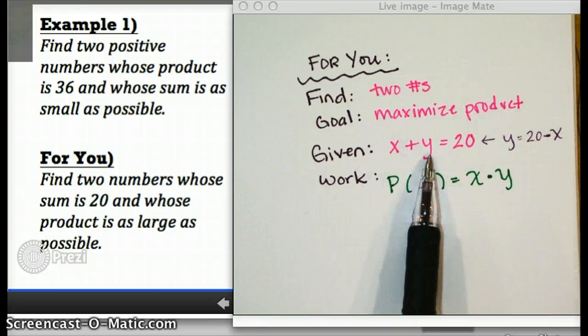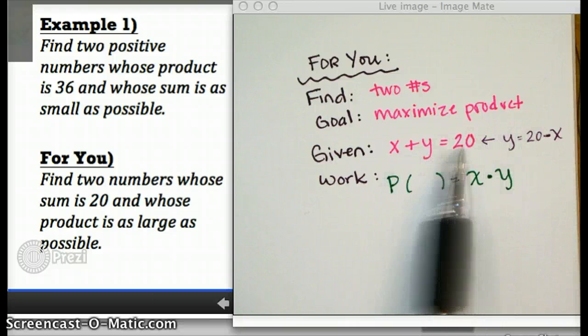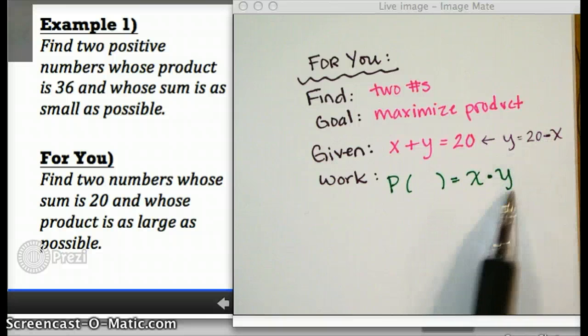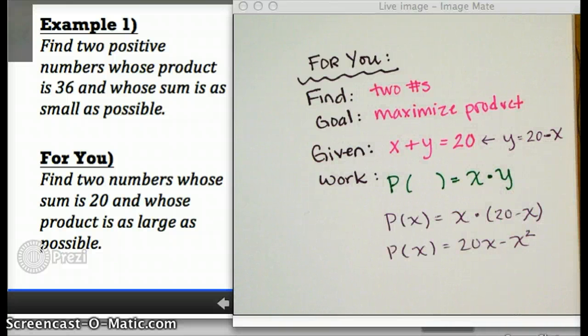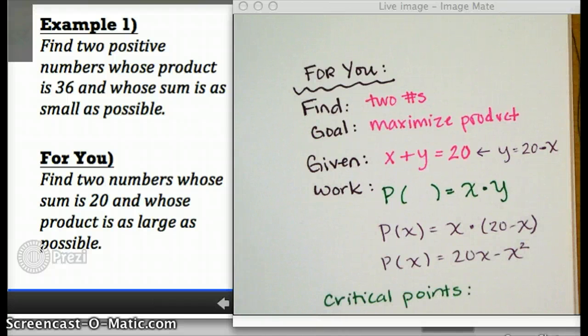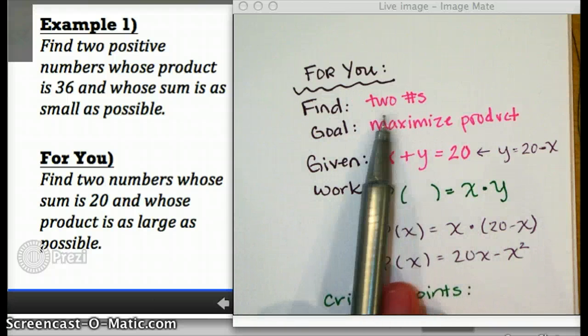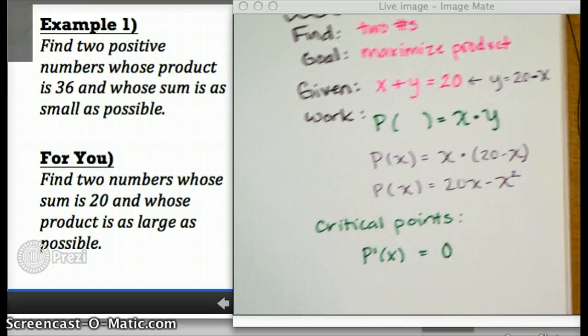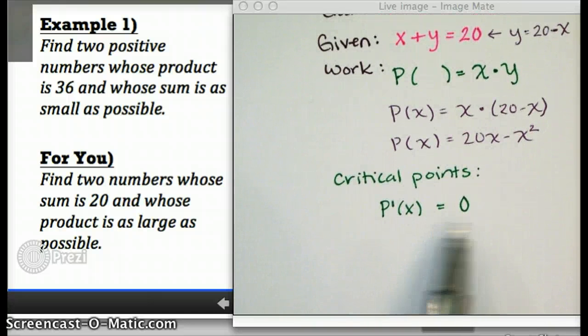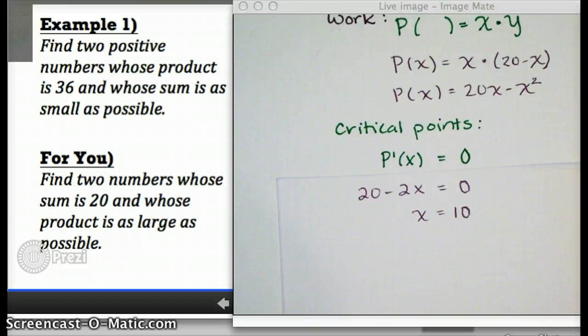Now, I've got the start of a function because I know product means x times y. The problem is I still need to find a different way of writing this that only has one variable. What am I going to use to do that? Yep, we're just going to use the given information. And then I'm going to, when I rearrange that for y, I'm going to substitute what I get in for the y variable, which gives me this really nice function. I have a function whose output is the product and whose input is one of the two numbers, which obviously at the end I'm going to use to find both numbers. What's next?